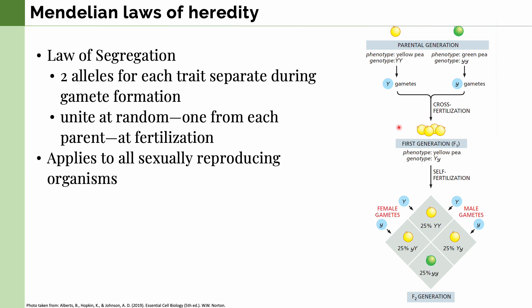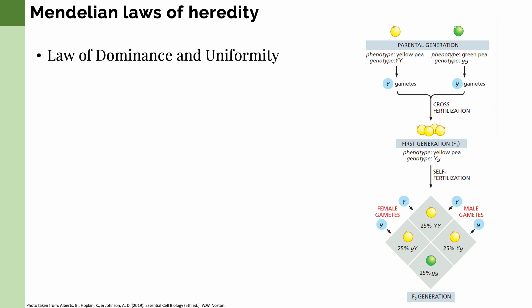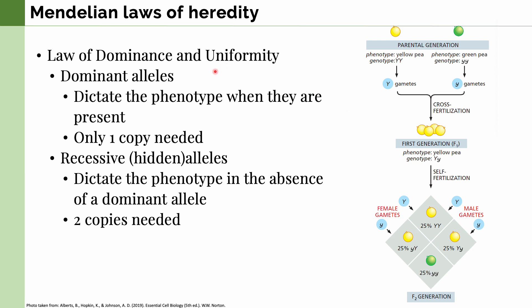But the question is, why is the first generation yellow and not a combination of yellow and green? This leads to Mendel's second law, the law of dominance and uniformity. Different alleles are expressed in different ways. Dominant alleles dictate the phenotype whenever they are present — only one copy is needed. Recessive, or hidden, alleles dictate the phenotype only in the absence of the dominant allele, requiring two copies. This is why the F1 generation were yellow: yellow was the dominant phenotype.